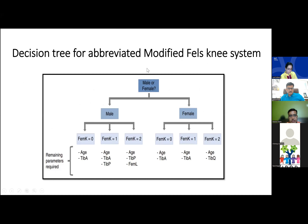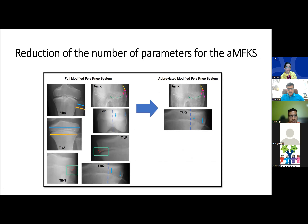A decision tree for the abbreviated modified Fells knee system was presented. For males and females, the FemK capping system (stages 0, 1, 2) determines which remaining parameters to use — for stage 0: age and TibA; for stage 1: age, TibA, and TibP. This approach reduces the system to essentially two major parameters plus age and sex, creating a skeletal maturity assessment equally accurate to the seven-parameter system and better than the Greulich-Pyle atlas.